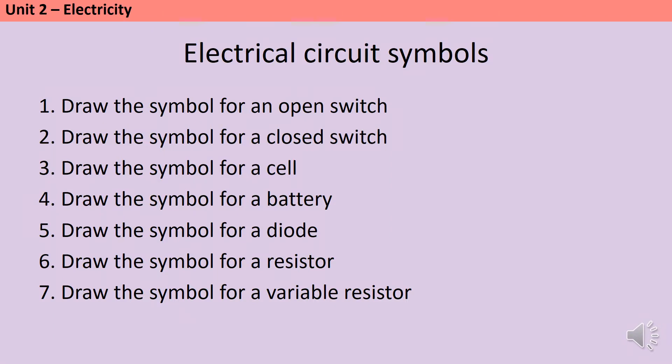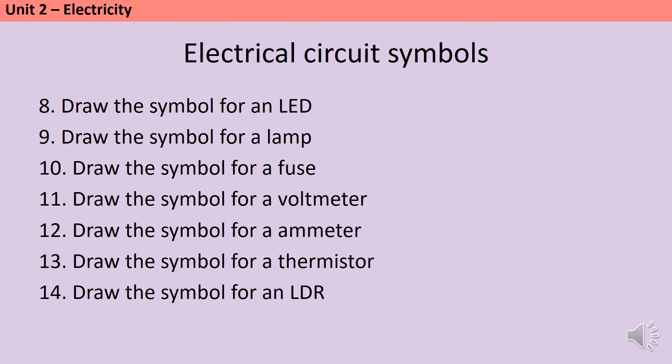The first fourteen questions are all about recalling the symbols for various different components in electrical circuits. These include the open switch, the closed switch, a cell and a battery, a diode, a resistor and a variable resistor. An LED is a light emitting diode, so the symbol is the same as a diode but with two arrows to represent the light being emitted.